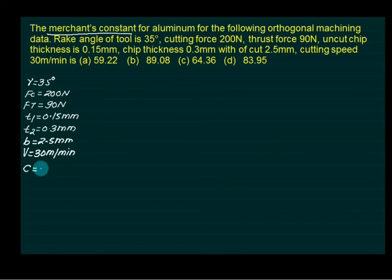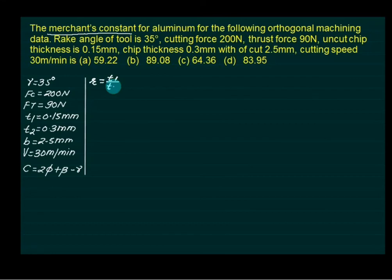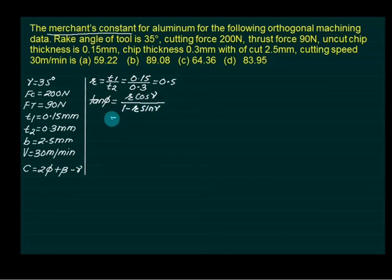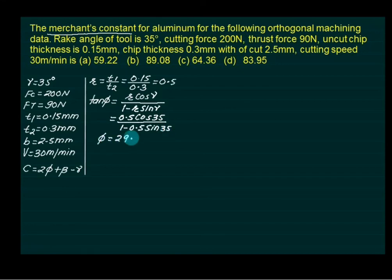The Merchant constant is given by C equals 2φ plus beta minus gamma. First, we calculate the shear angle φ using tan(φ) equals R·cos(γ) divided by (1 minus R·sin(γ)), where R equals T1/T2 equals 0.15/0.3 equals 0.5. Substituting R equals 0.5 and gamma equals 35 degrees, we get φ equals 29.86 degrees.